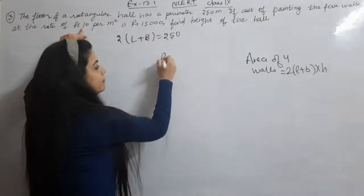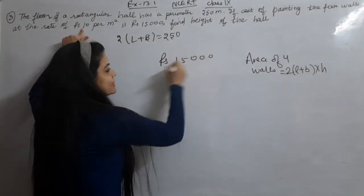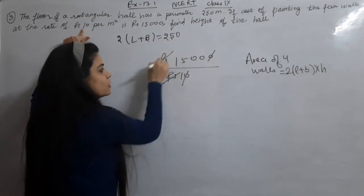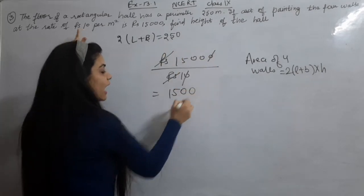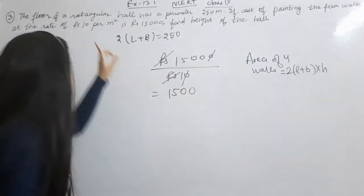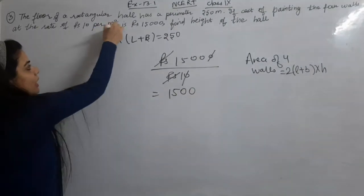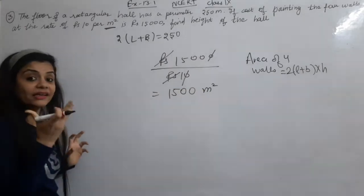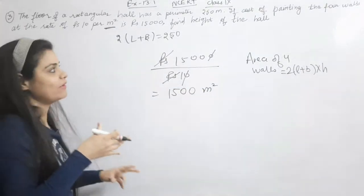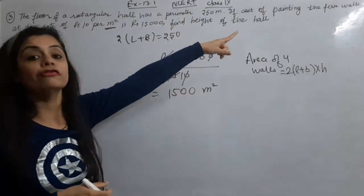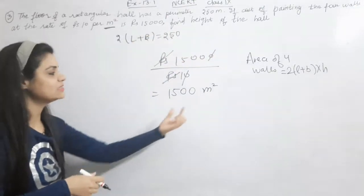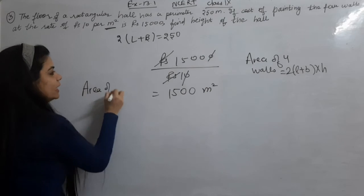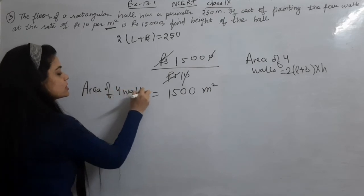Rupees 15,000 upon rupees 10 — we cut the zeros, rupees by rupees cancel — so 1,500 comes. The unit of that result is meter square. So what does this give us? The area of 4 walls is 1,500 meter square.